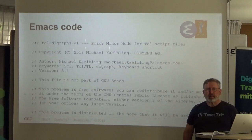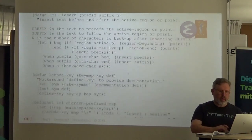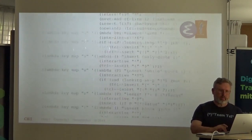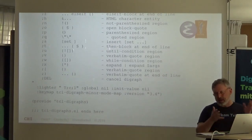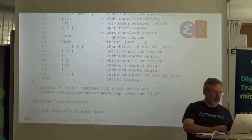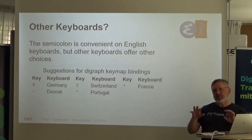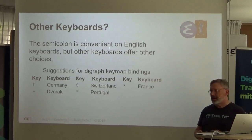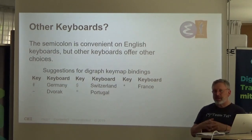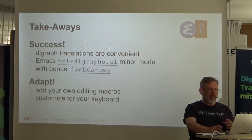For the Emacs users out there, this presentation contains the Emacs code. Go to eurotickle.eu and download this file, and cut and paste — you're ready to use it. For other keyboards, it looks like on the German keyboard the hash key would be a nice choice, or in Switzerland maybe the dollar, in France the star. You get the source code for Emacs, you can make it work the way you want it to. Some takeaways: it helps me, the source code is here, make it work for you. Thank you.